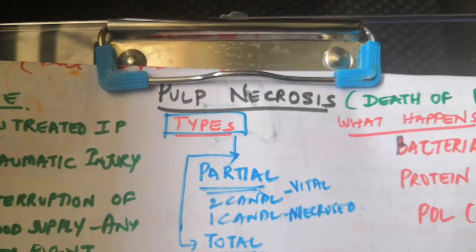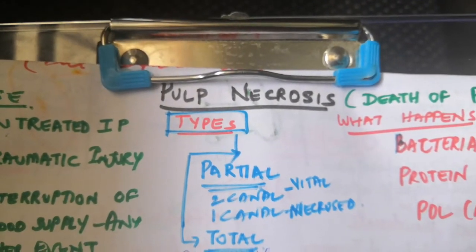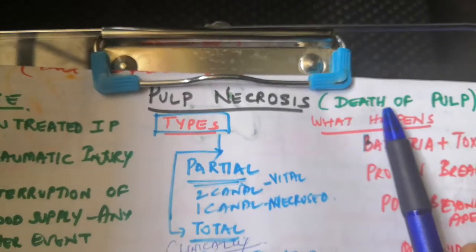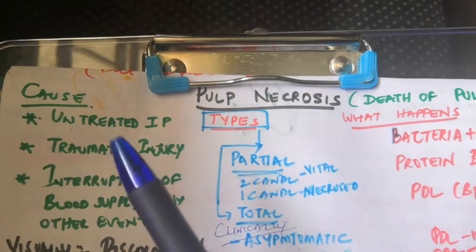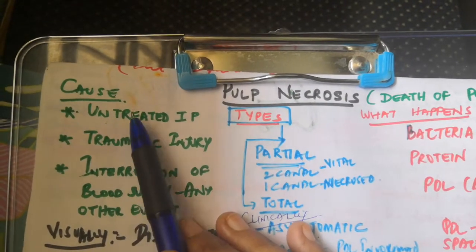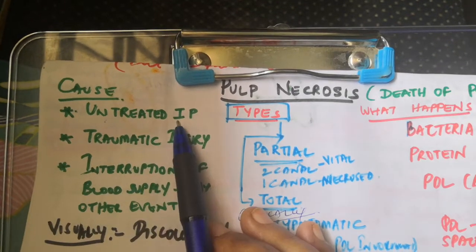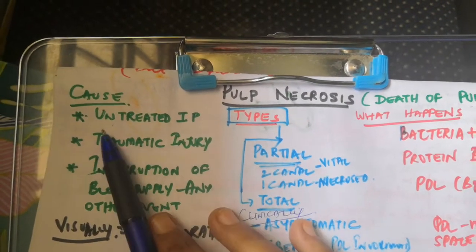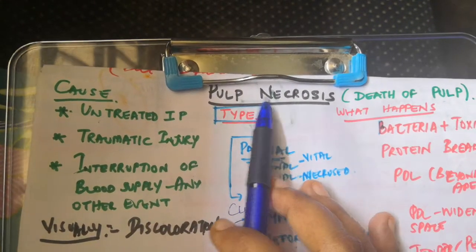Today's topic is pulpal necrosis. Necrosis means death, so death of the pulp is called pulpal necrosis. The pulp undergoes necrosis when caries, attrition, or abrasion ultimately lead to pulpitis — specifically irreversible pulpitis — which, if left untreated, will progress to necrosis.